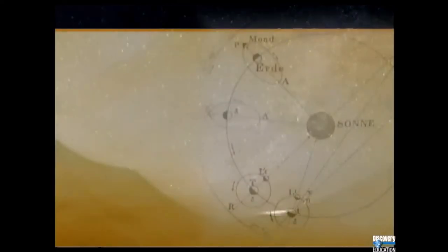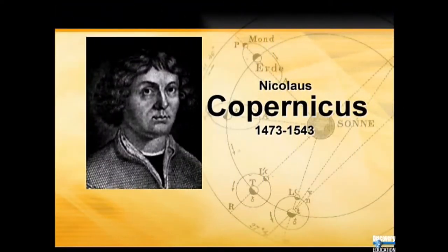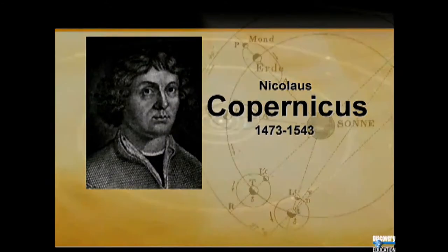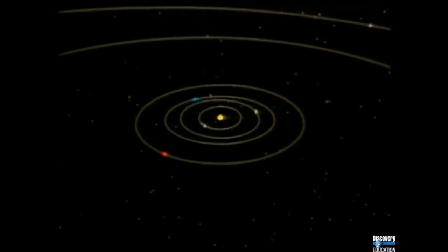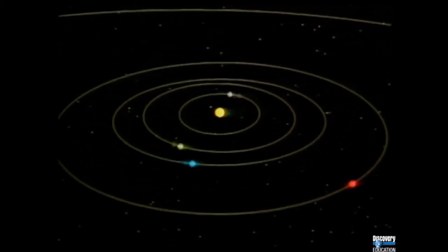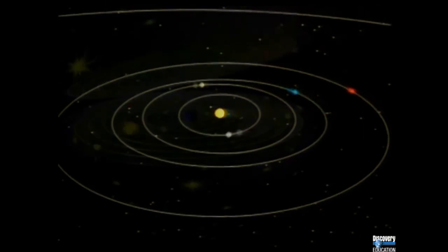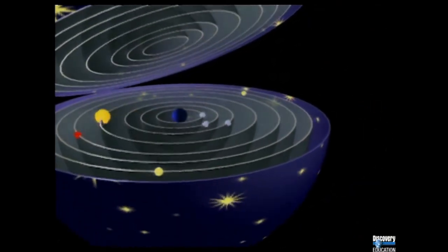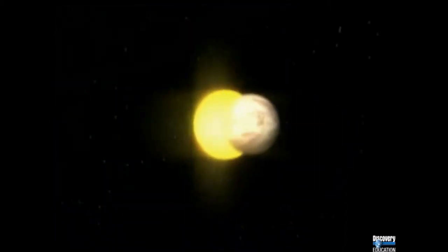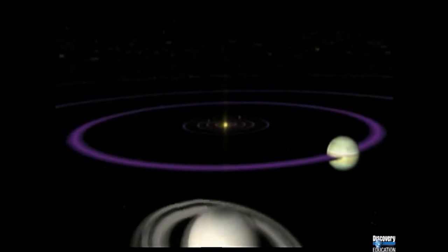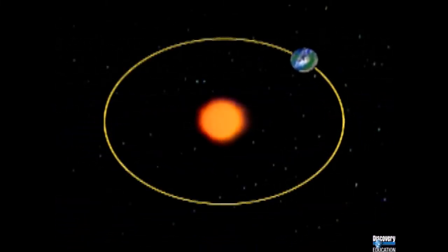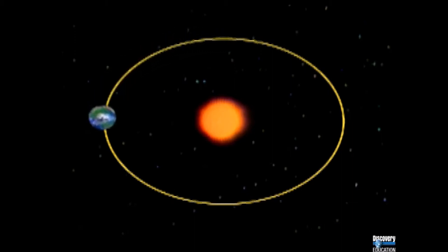Our modern understanding of the solar system began with Nicholas Copernicus, a Polish astronomer. The Copernican system set forth the revolutionary idea that the sun was motionless at the center of the solar system and that all objects in the sky revolved around it. Before that time, most believed the sun revolved around Earth. Today, it is common knowledge that Earth revolves around the sun in an elliptical orbit, taking approximately 365 and a quarter days — one Earth year.